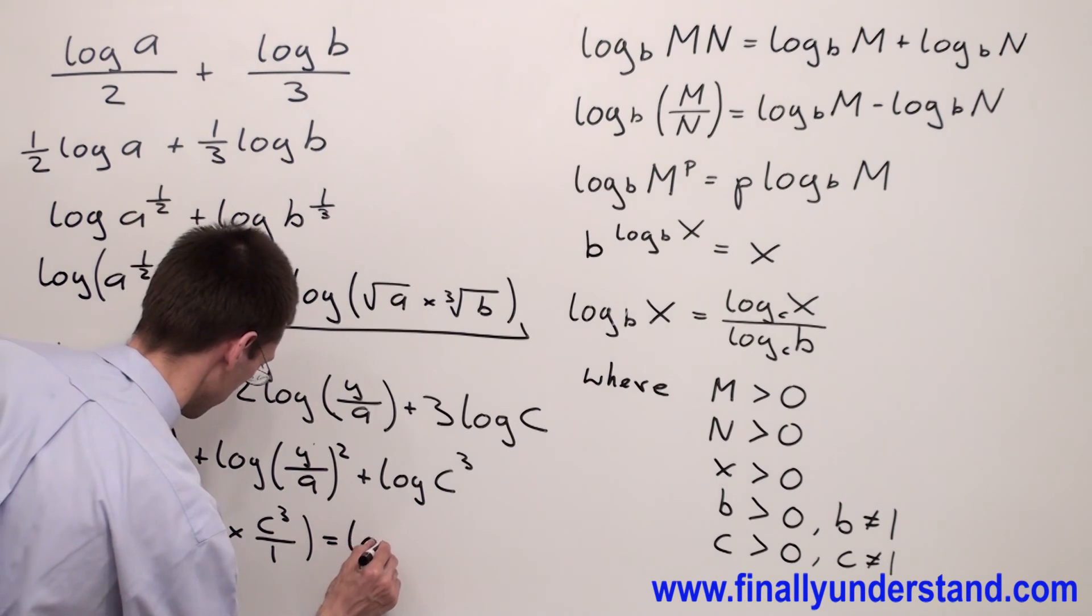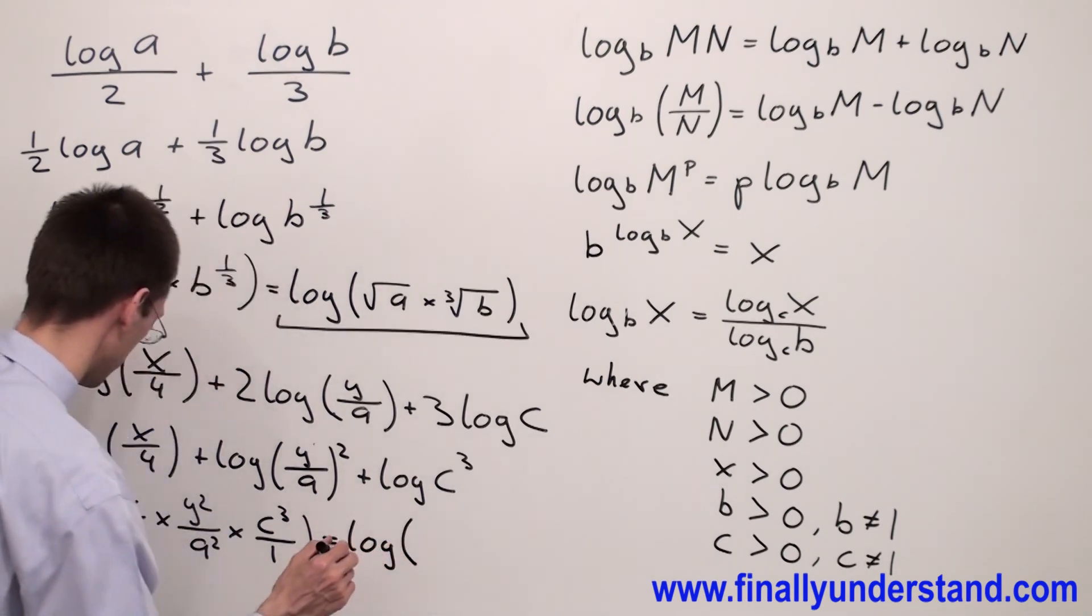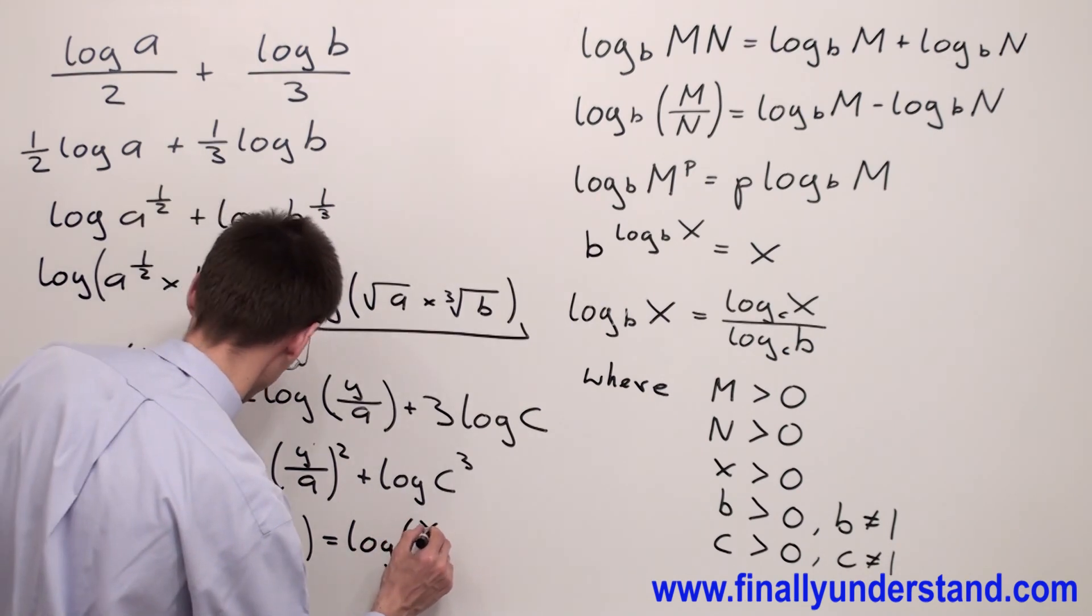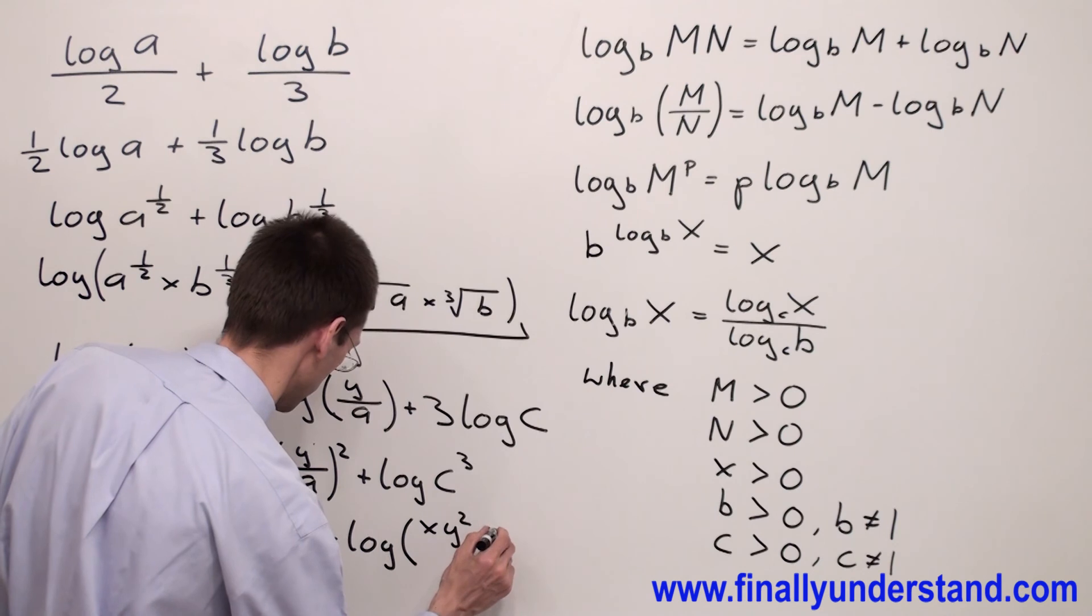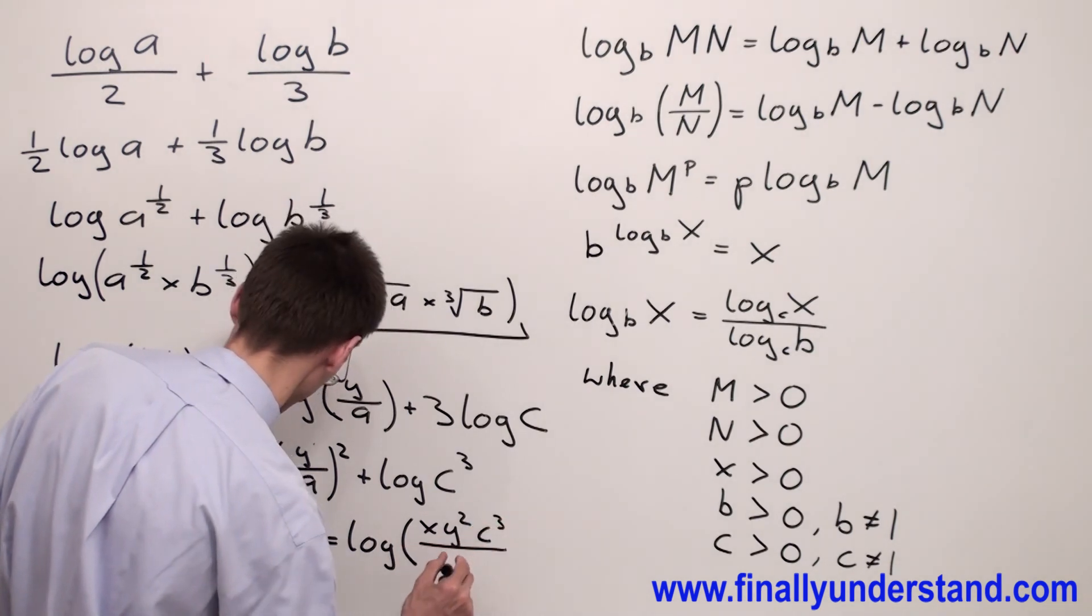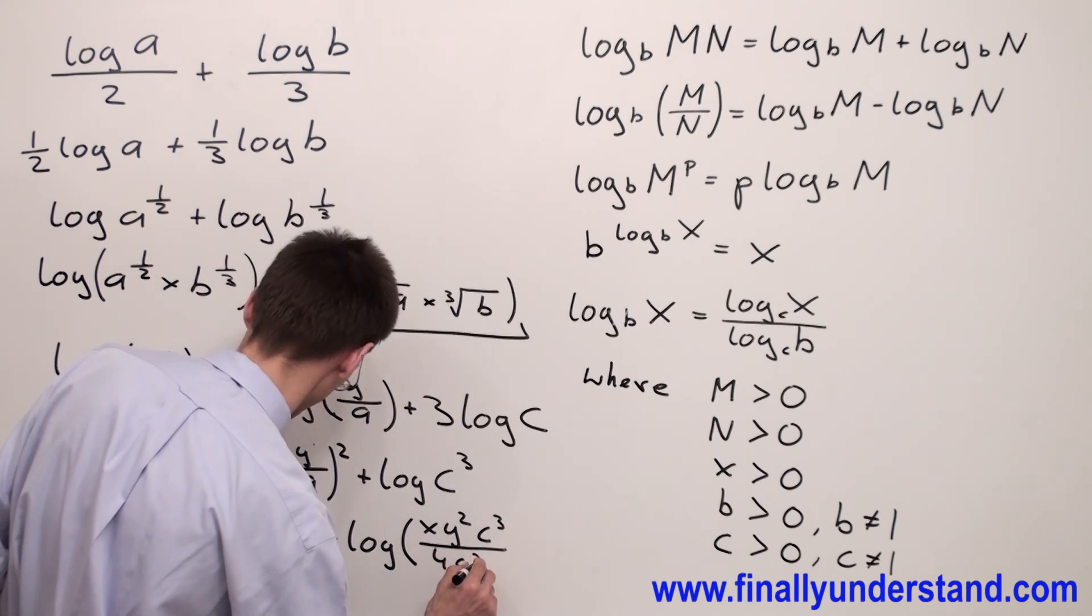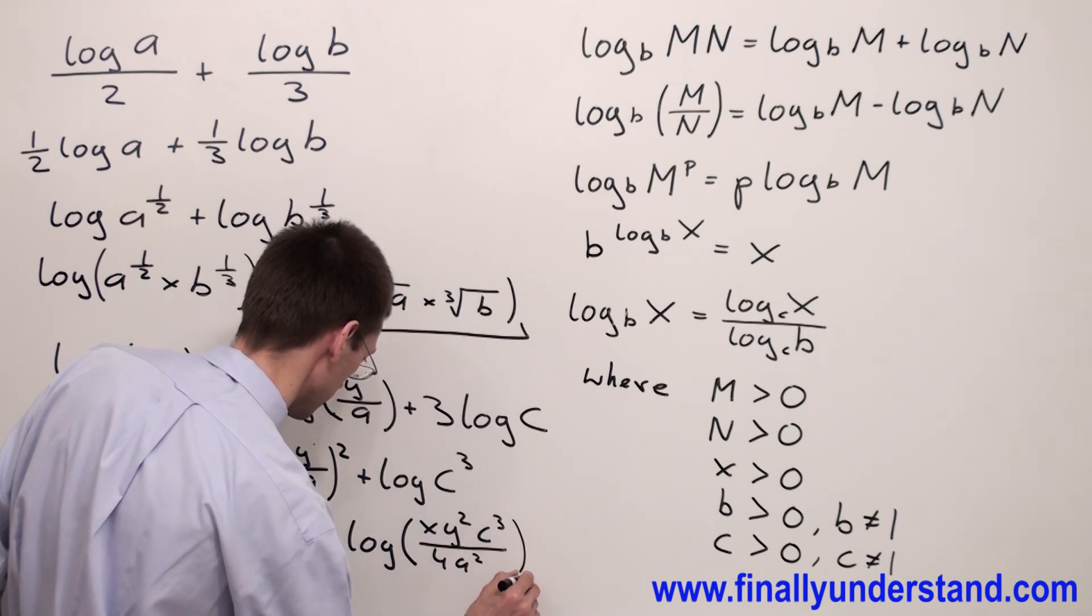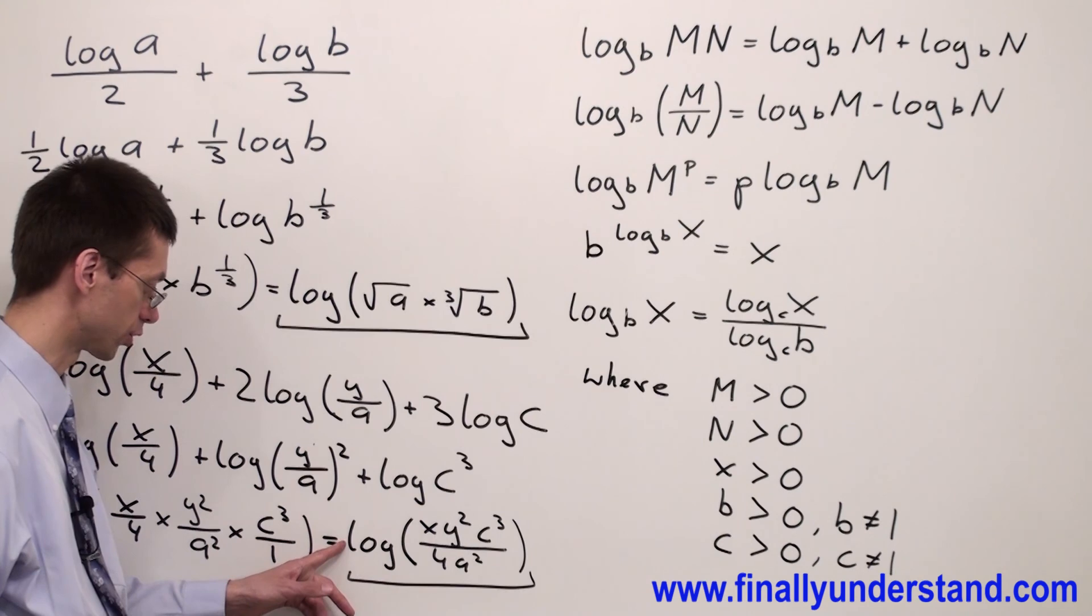So this is log and I have x y to the second power c to the third power over 4a square. This is the single log with coefficient 1. So this is the solution to my problem.